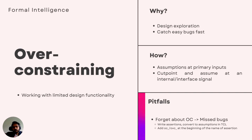Write assertions in the SV files and not assumptions, and convert them into assumptions in the TCL. Second, whenever you write an over-constraint, add a prefix like 'oc' or 'ovc' to the name of the assertion. In the tool you can then filter out these assumptions and check whether any are still active with the 'oc' or 'ovc' prefix. This helps ensure you're not missing any active over-constraints.